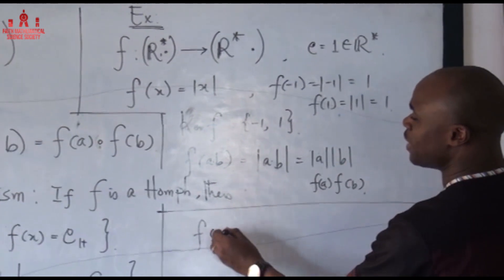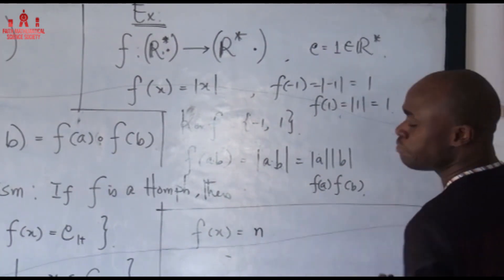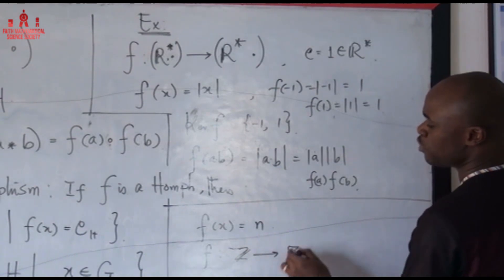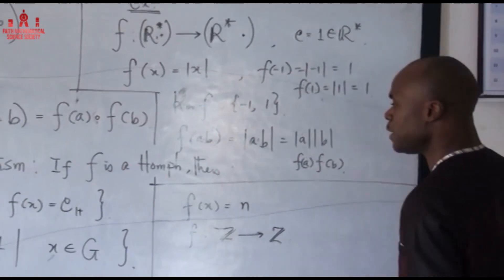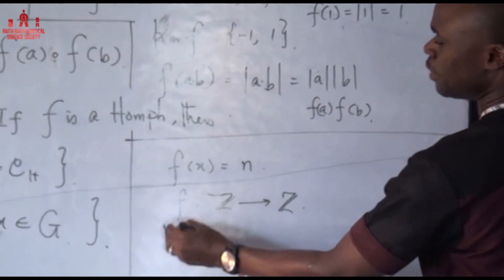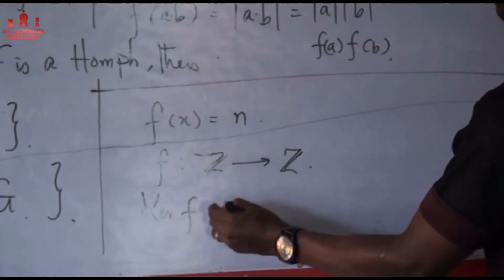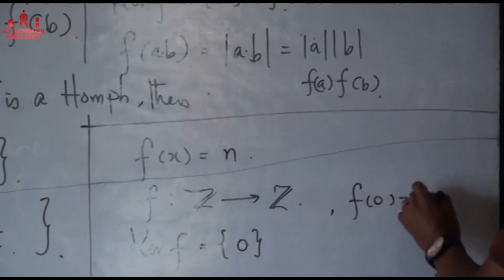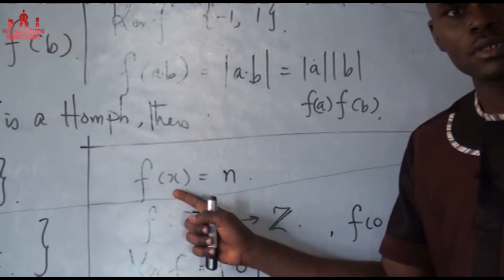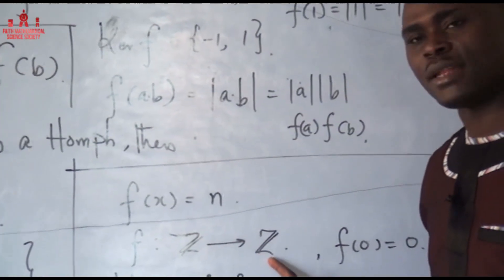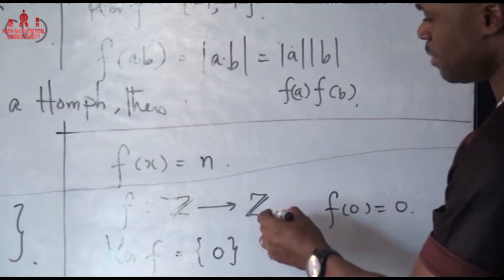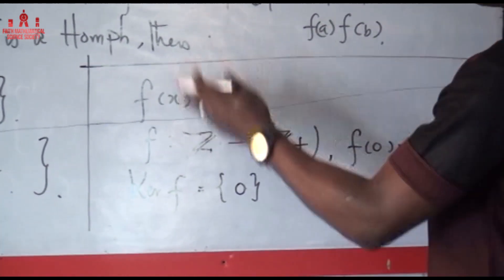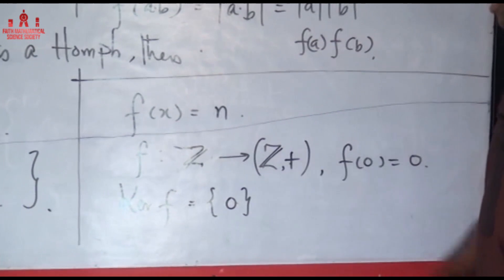Another example: let f(x) = nx, a homomorphism from Z to Z (the integers under addition). The kernel of this homomorphism is simply {0}. This is because f(0) = n·0 = 0, and the identity element in Z under addition is 0. So the only element that maps to the identity is 0.